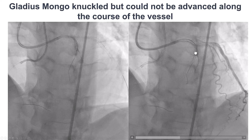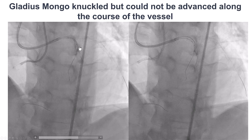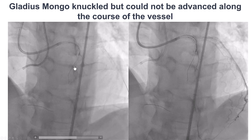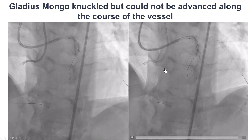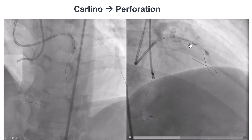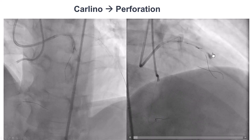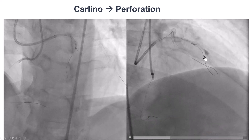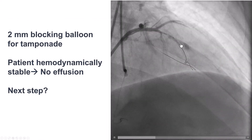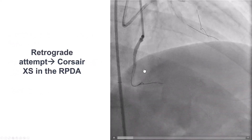We tried to knuckle the wire to advance it, but that didn't work. We then performed the Carlino technique, injecting a small amount of contrast through the microcatheter. We observed some staining, which looked like a perforation. We decided to occlude this with a small balloon. The contrast was not rapidly dissipating, suggesting this may be a contained dissection. The patient was doing fine, an echo was performed, and there was no effusion.